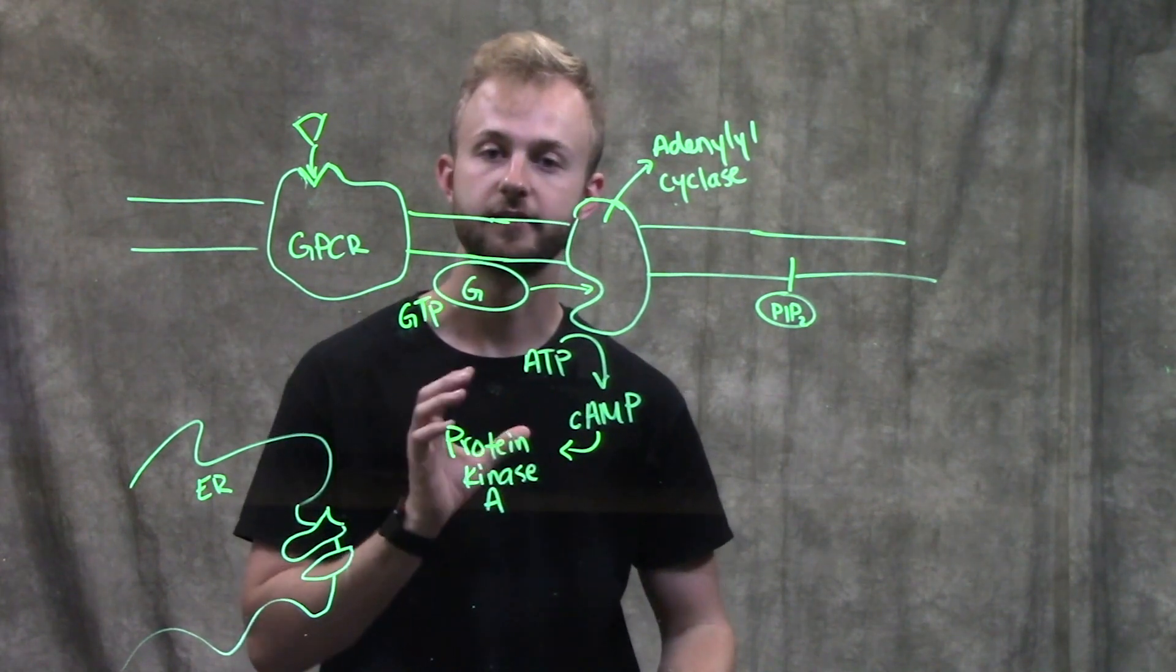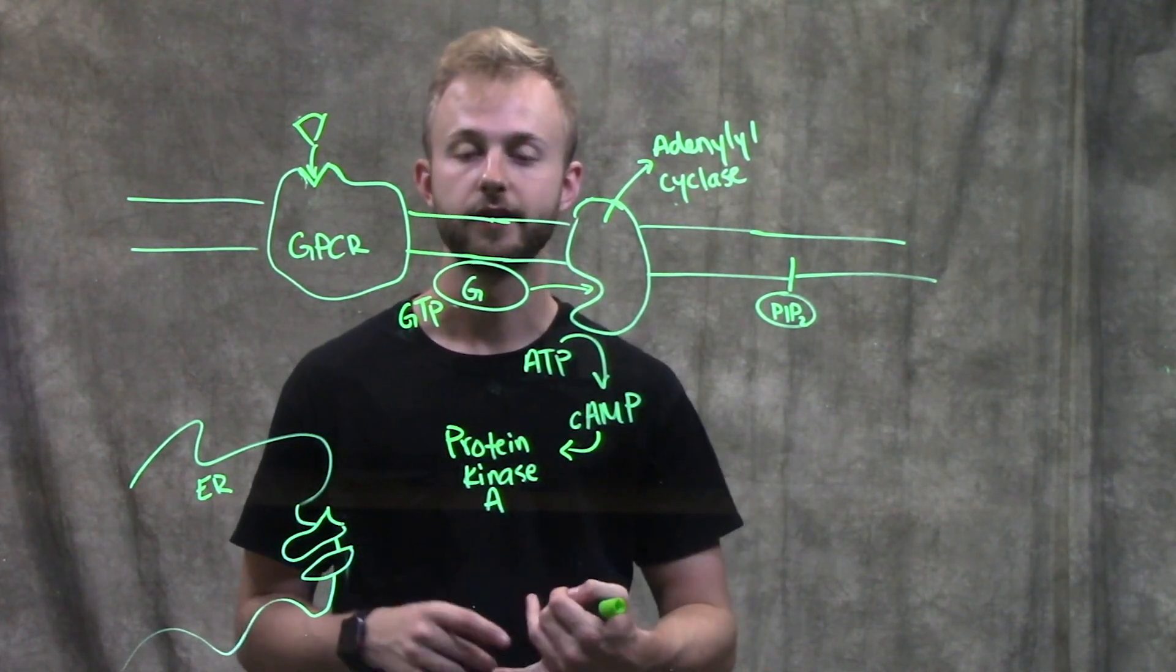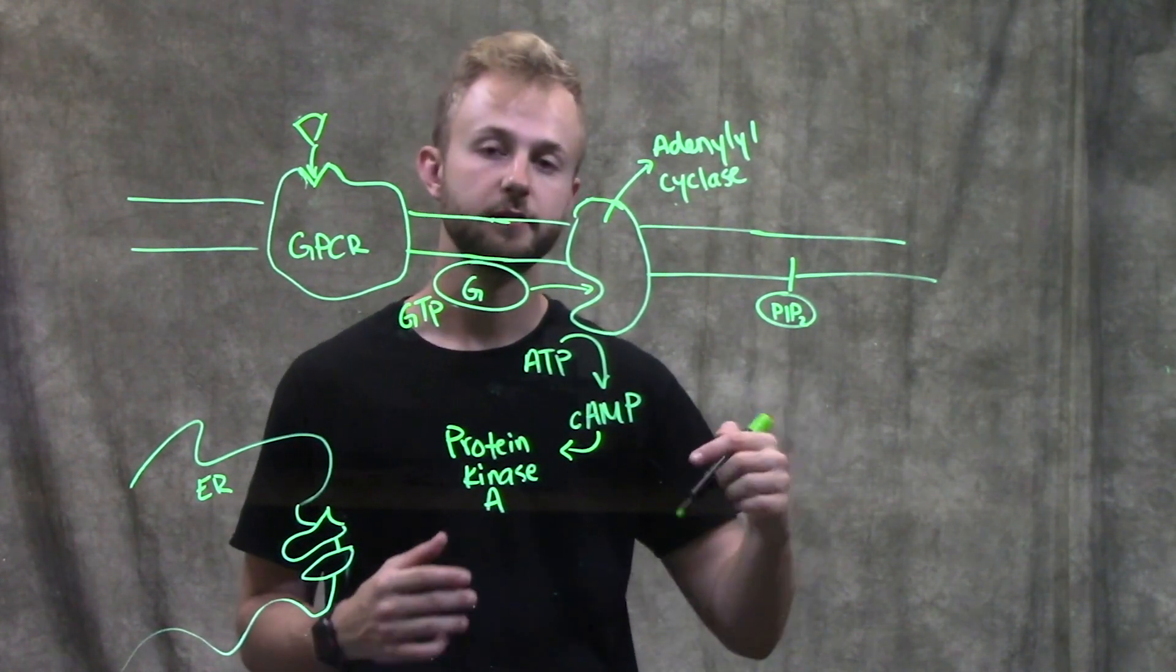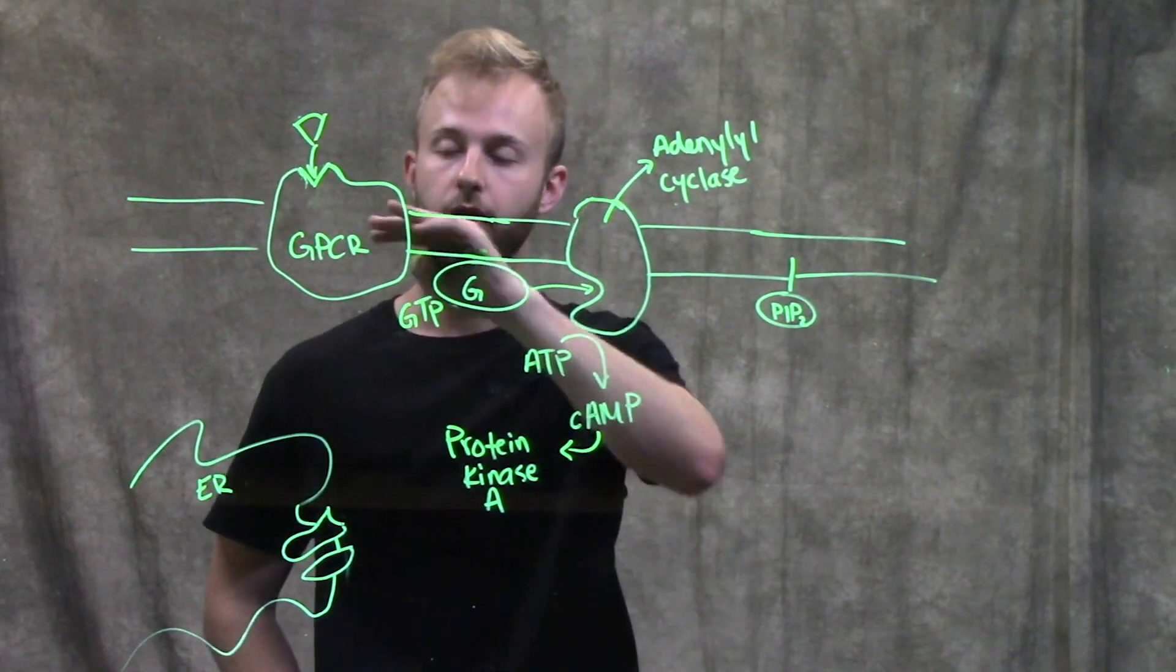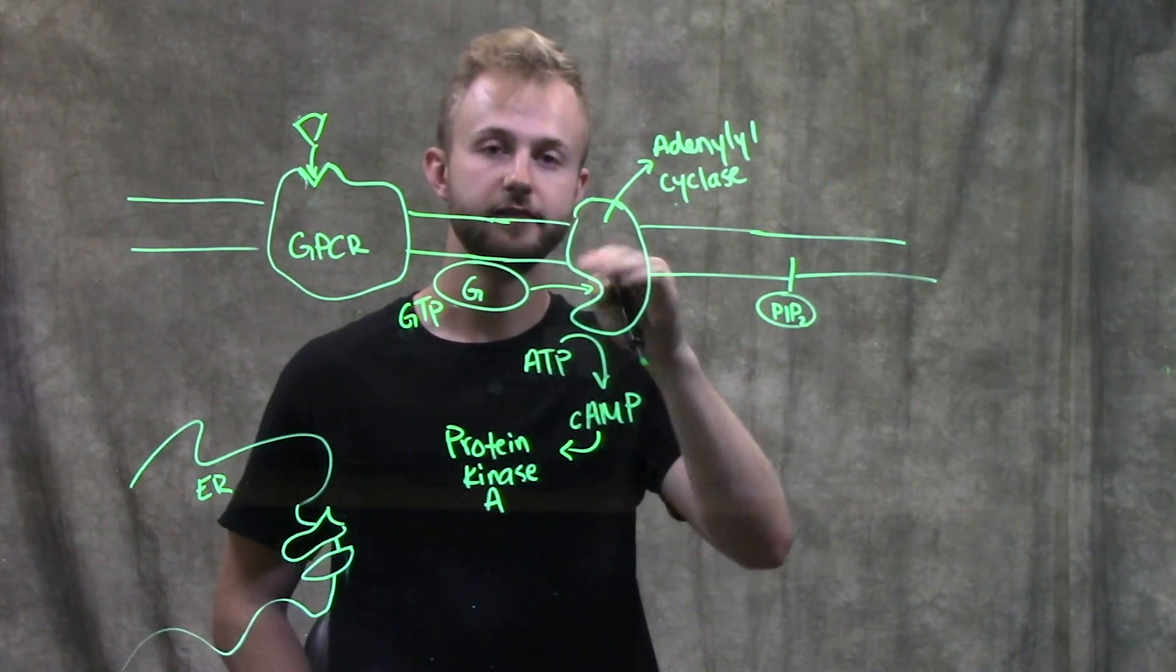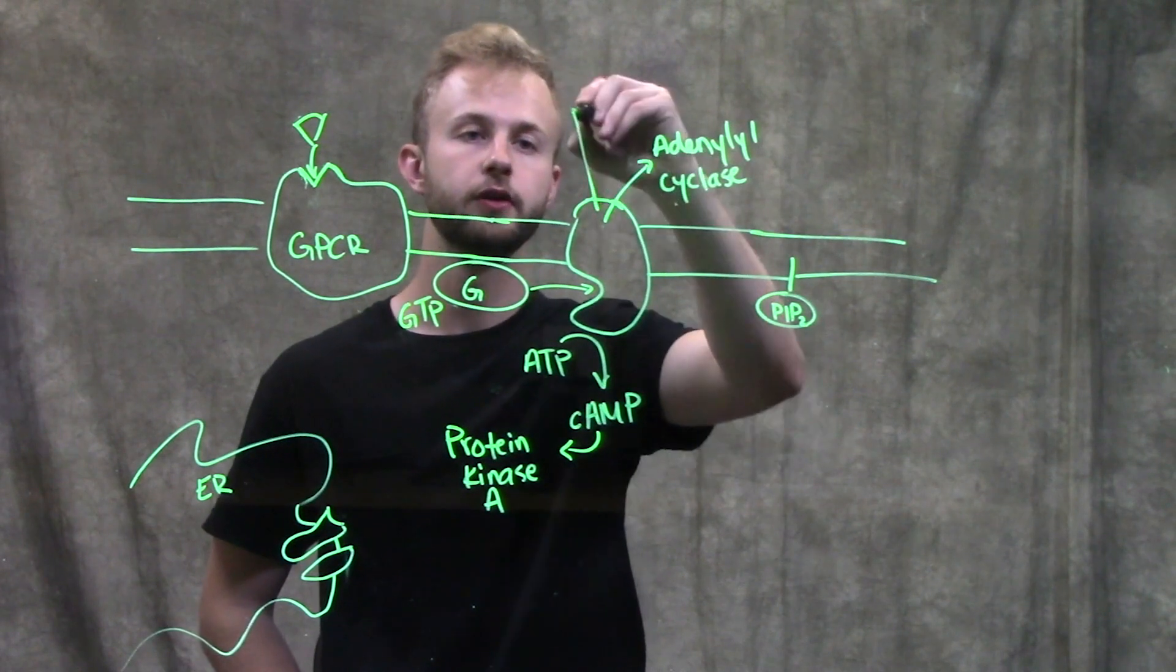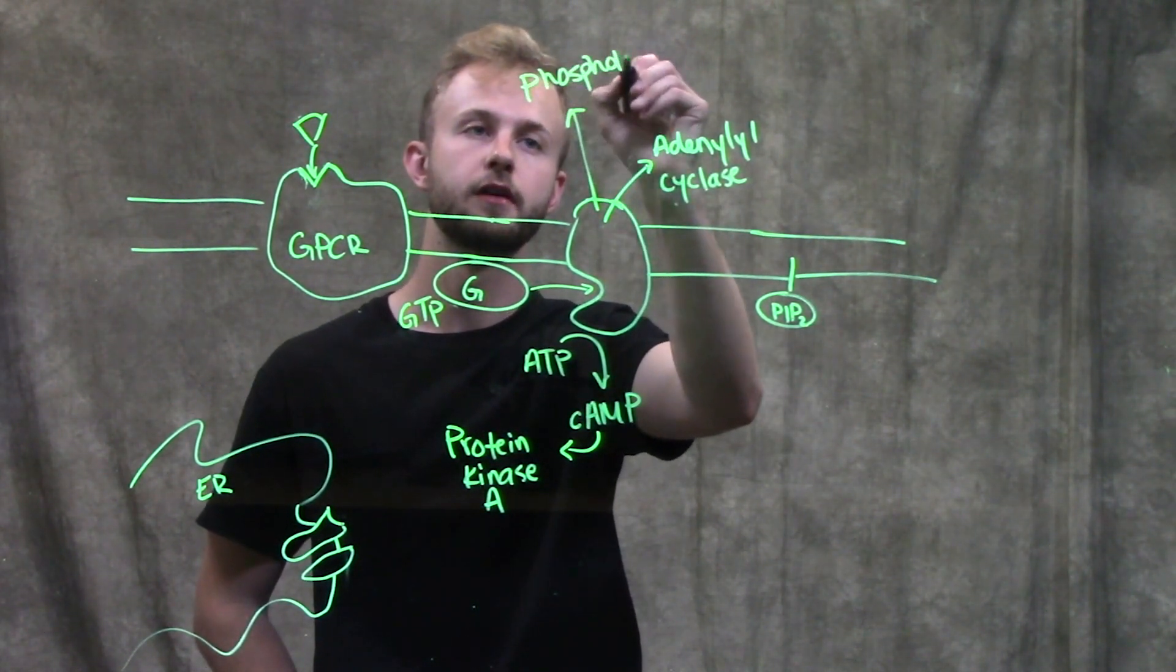Now that we've looked at cyclic AMP, we'll look at another important one with IP3 and calcium. Again, this pathway is going to be activated by a GPCR. We'll have the ligand bind, we'll have the G protein become activated, and instead of going to adenylyl cyclase this time, it's going to go to something called phospholipase C.